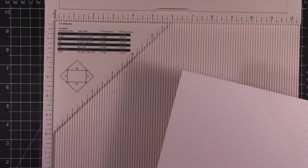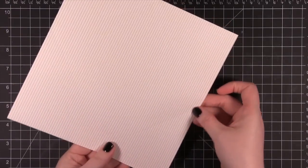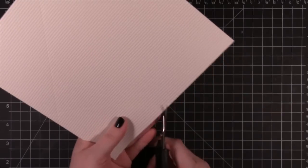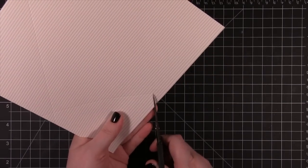So at this point we're done with the scoring board. I have little triangle areas on the edges that I'm going to use scissors to cut out.